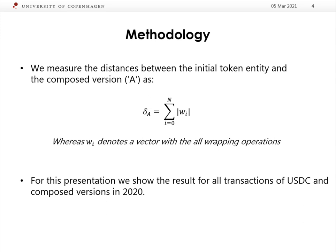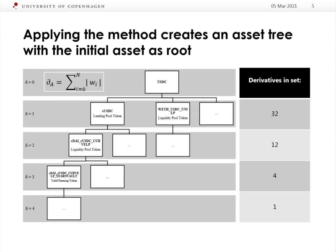We apply the method on USDC, finding wrapped versions of USDC and calculating the specific distance. Our data has been gathered considering all 345 million transactions on Ethereum in 2020. To find derivatives of the initial asset, we take 10,000 random USDC transactions within this dataset, identify all ERC-20 tokens which have been sent, classify if the ERC-20 tokens are wrapped versions of the initial asset, and after this first iteration the identified composed versions of USDC have a distance of 1.